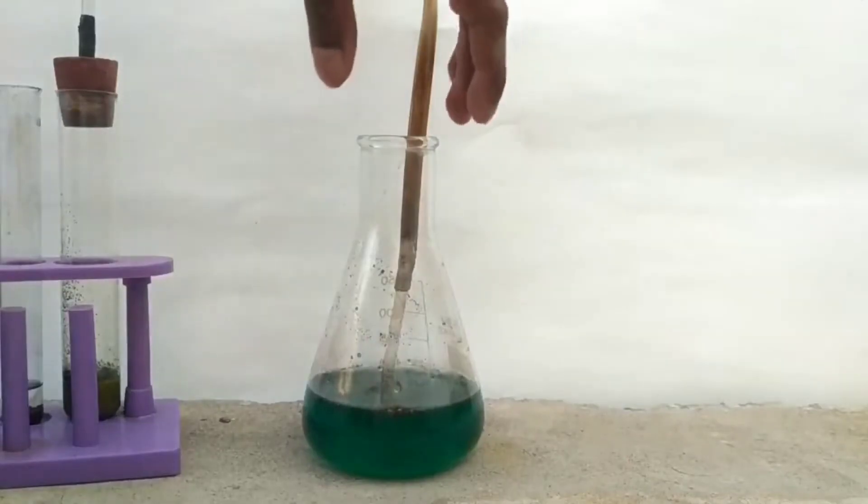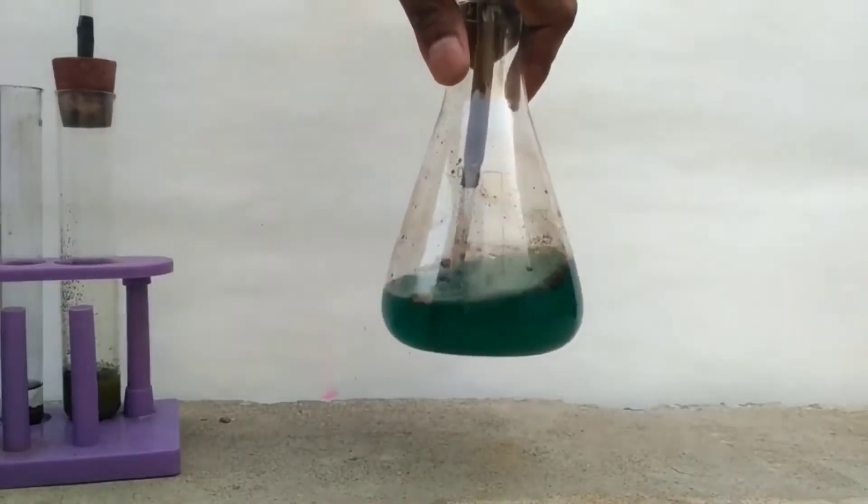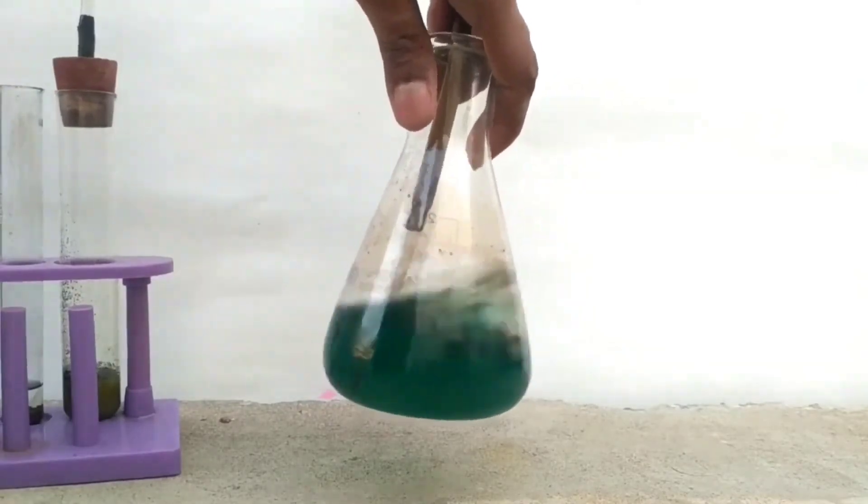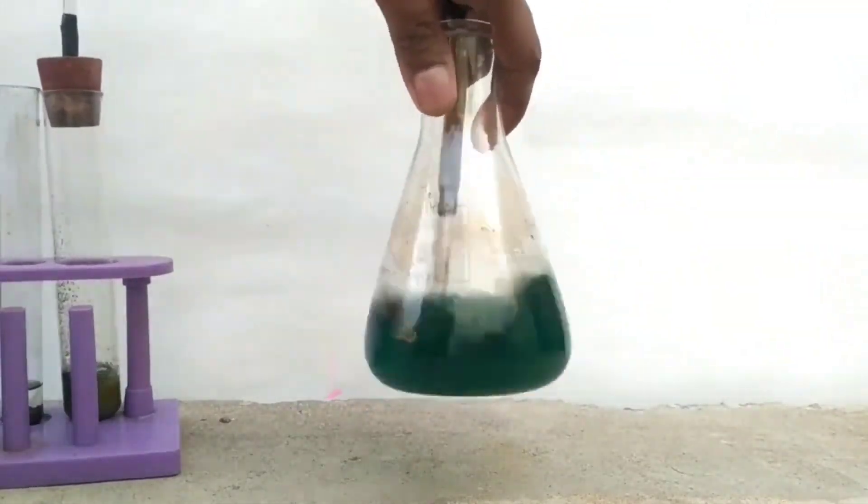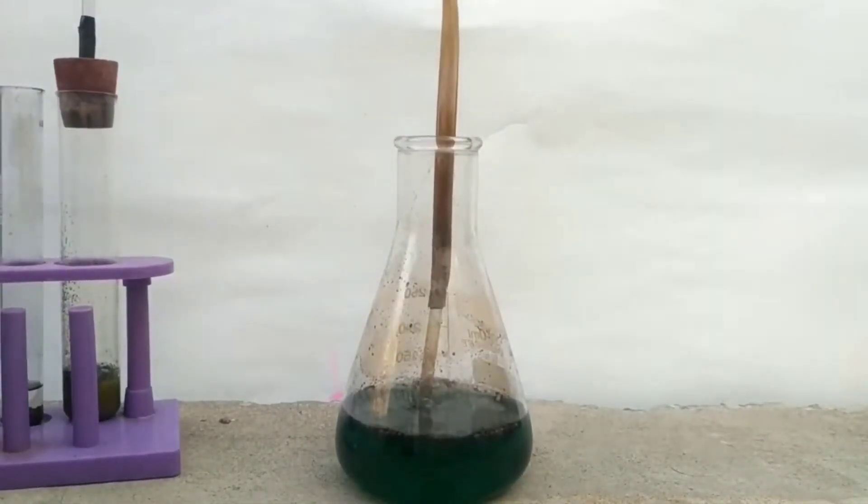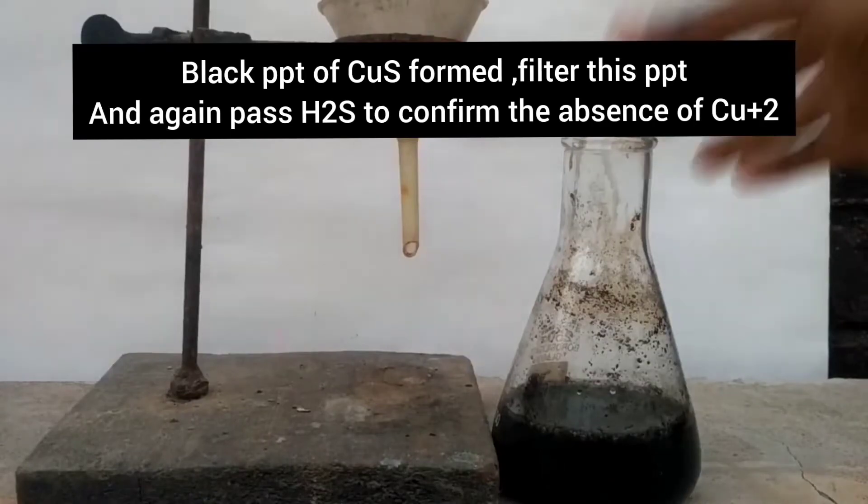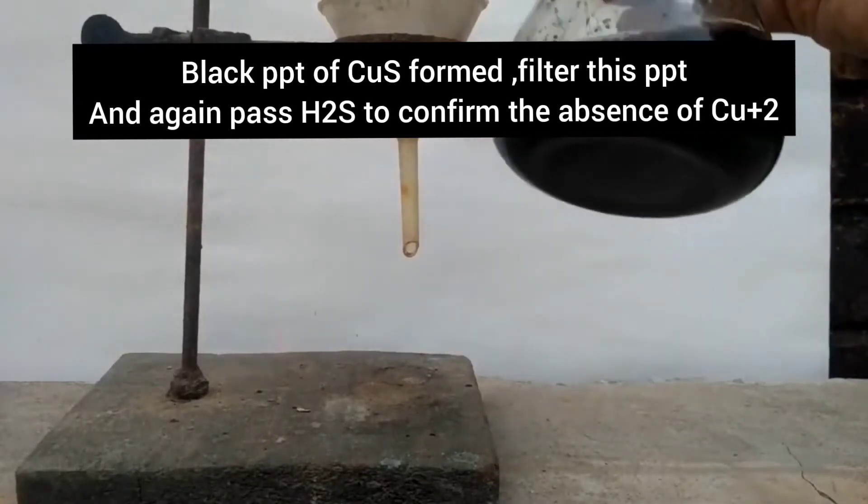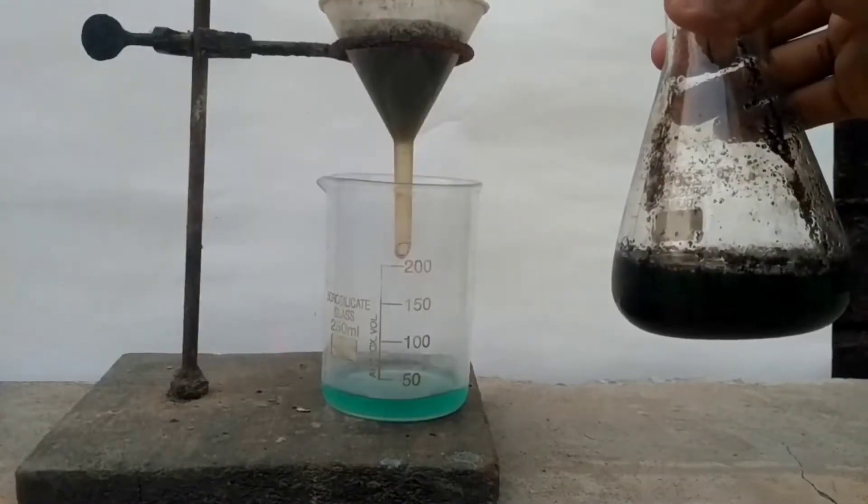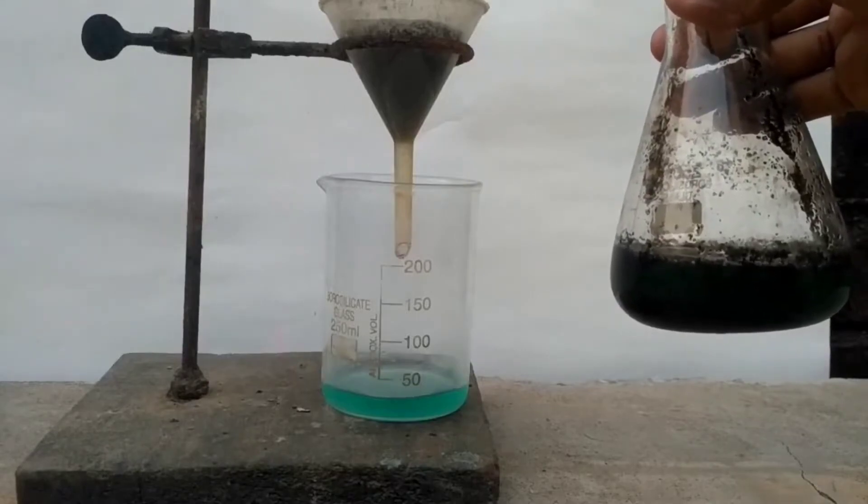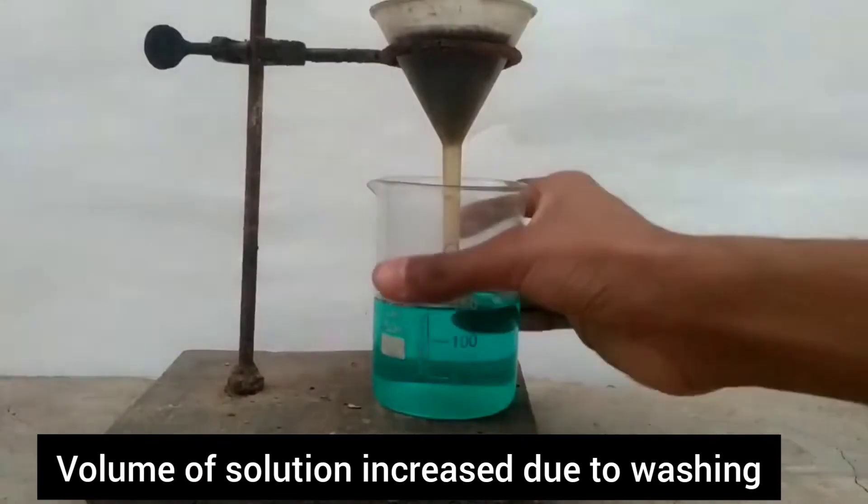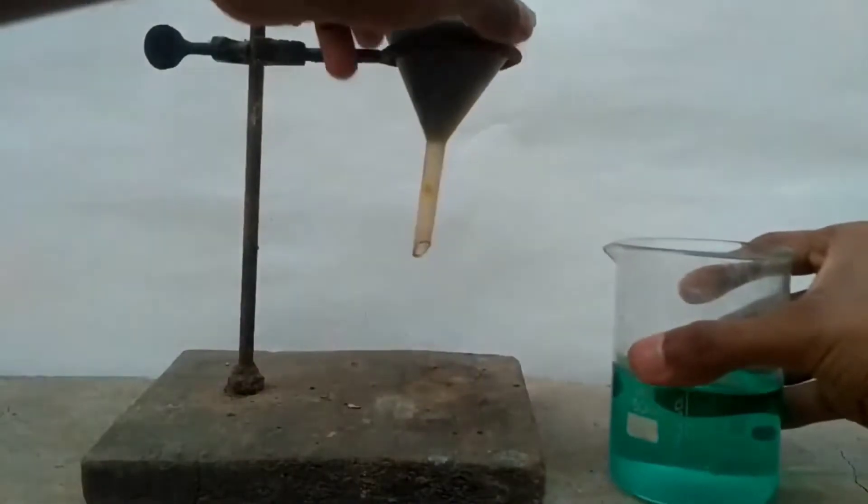On passing hydrogen sulphide, a black precipitate of copper sulphide is formed. I am filtering this precipitate using regular gravity filtration. I have washed the precipitate with some amount of water. That's why its volume is increased.